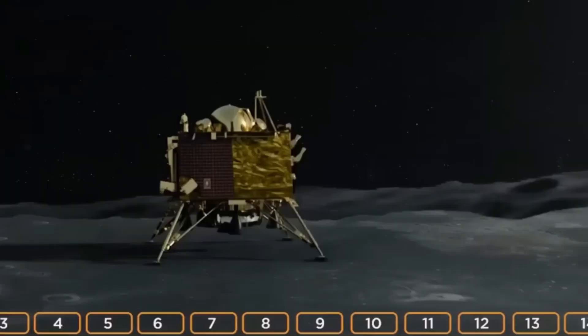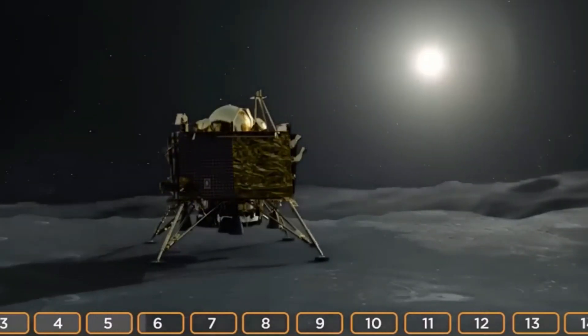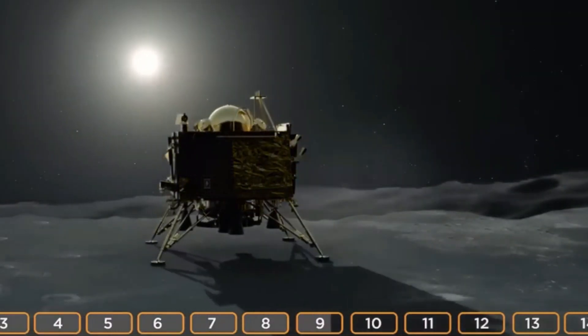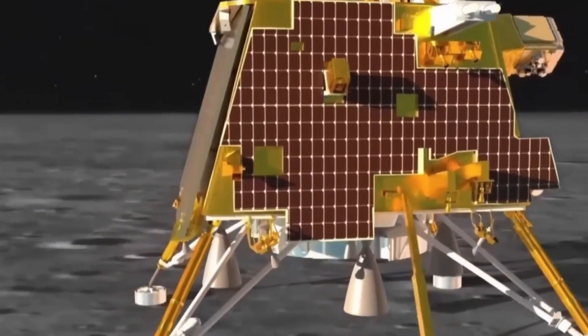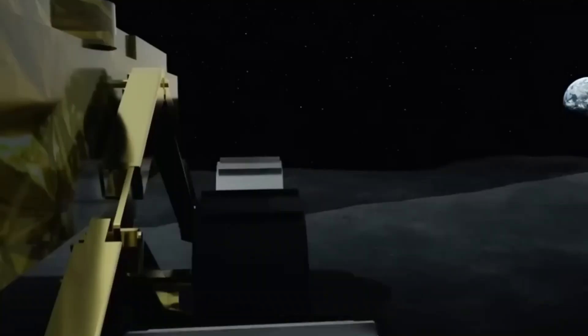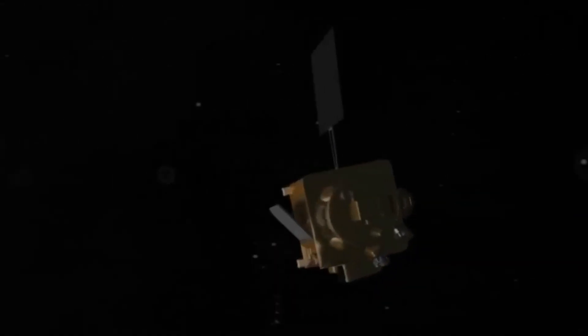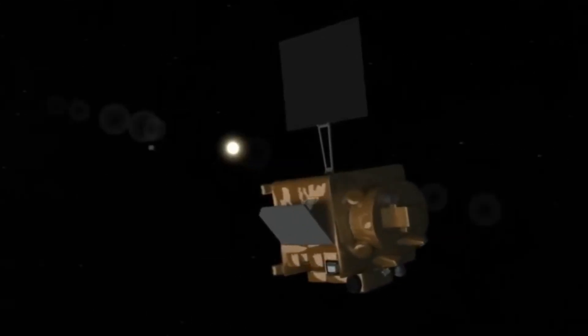Chandrayaan-3's lander and rover are expected to operate for at least one lunar day, which is equivalent to 14 Earth days. During this time, they will perform various experiments, sample analysis, technology testing, and exploration activities. They will communicate with mission control through Chandrayaan-2's orbiter, which is still orbiting the moon and sending data and images.